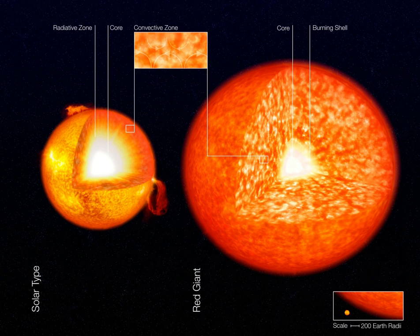Bright giants have luminosities between the normal giants and the supergiants, around absolute magnitude −3. Examples include Delta Orionis A1, the primary component of Mintaka, an O-type bright giant; Alpha Carinae, an F-type bright giant — Canopus — also sometimes classed as a supergiant.